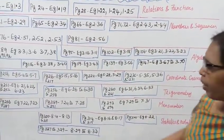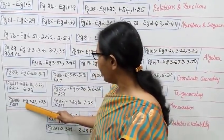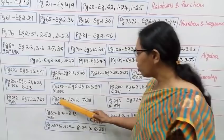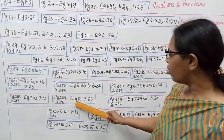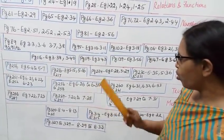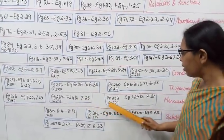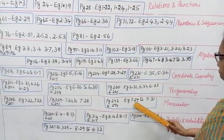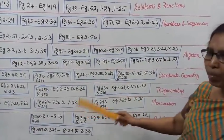Next is Mensuration. Page 286 to 287, examples 7.22, 7.23. Page 289 to 291, examples 7.24 to 7.28: 24, 25, 26, 27, 28 — these examples are important. Page 293 to 294, examples 7.29 to 7.31. This covers Mensuration.